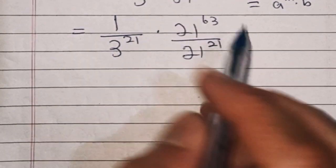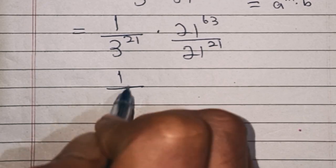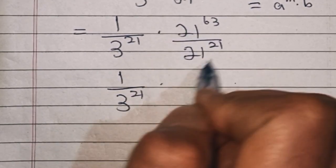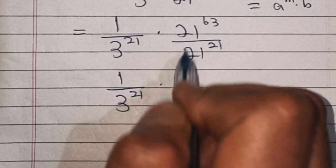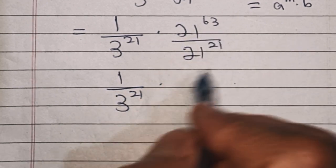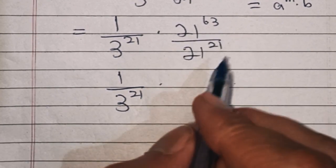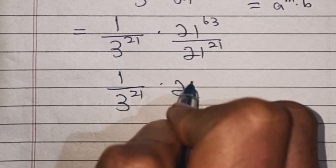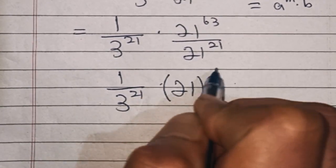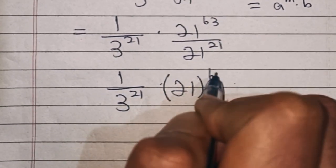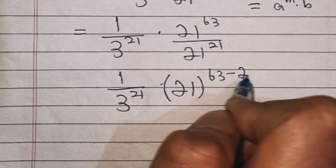In the next step we can write this as 1 over 3 power 21. Now here this is the division of same bases with different exponents, so this can be written as 21 then bracket power 63 minus 21